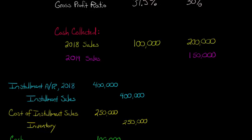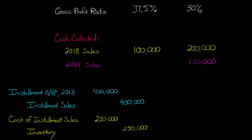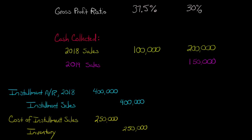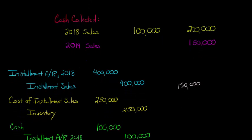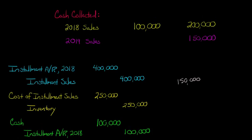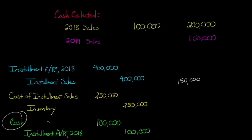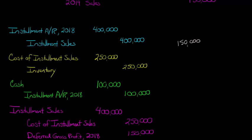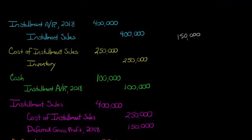So far everything's pretty normal. We've got $400,000 in sales minus cost of sales of $250,000, which gives us gross profit of $150,000. But we're not going to recognize that — we're going to defer it. At year-end closing entries, we debit sales for $400,000 to zero it out and credit cost of sales for $250,000 to zero that account out. Normally that plug would go to retained earnings, but we're going to defer the gross profit of $150,000.